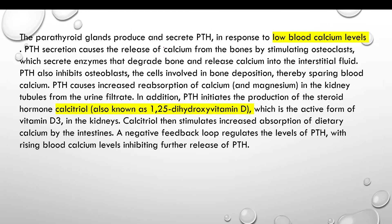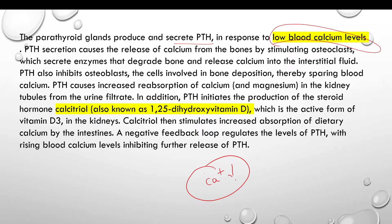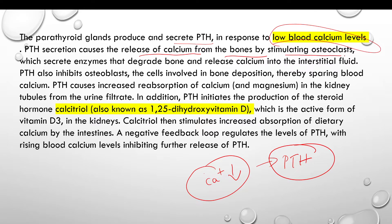Parathyroid glands produce and secrete parathyroid hormone in response to low blood calcium. When we need calcium in the blood, parathyroid hormone is produced. PTH releases calcium from the bone by stimulating osteoclasts.